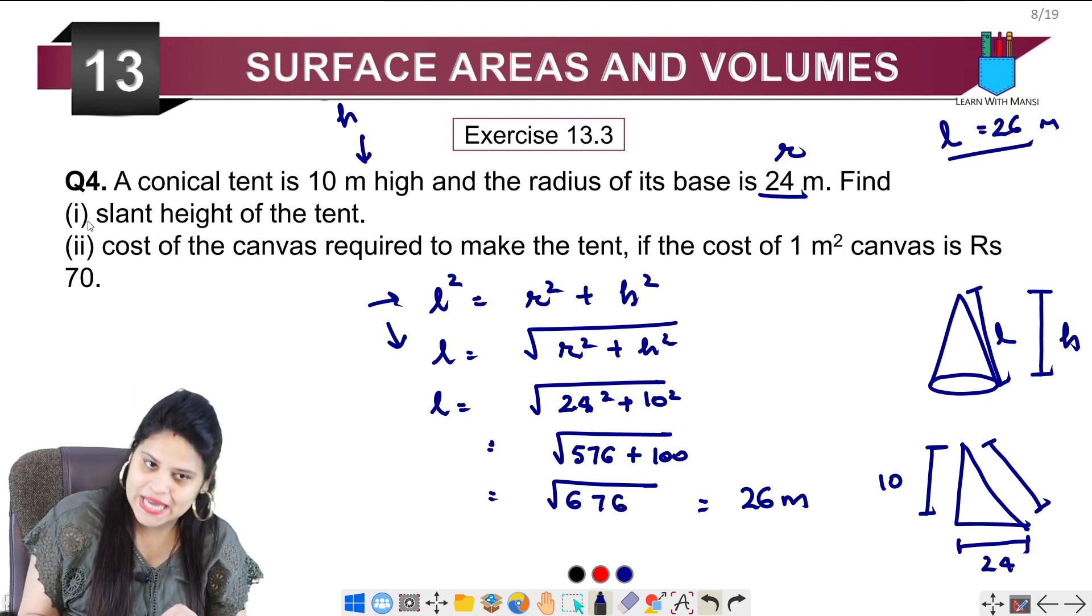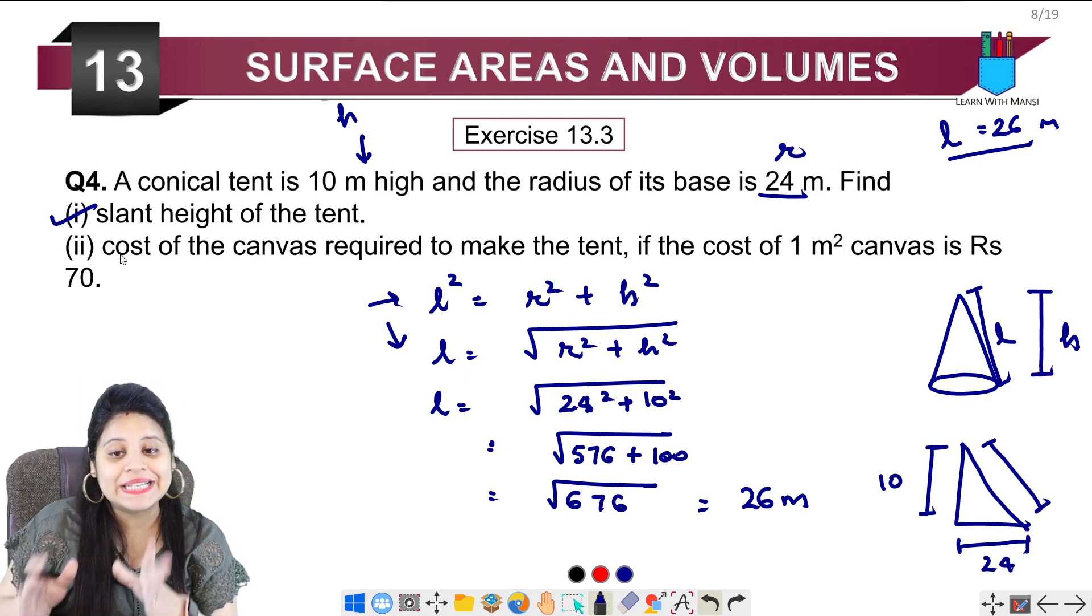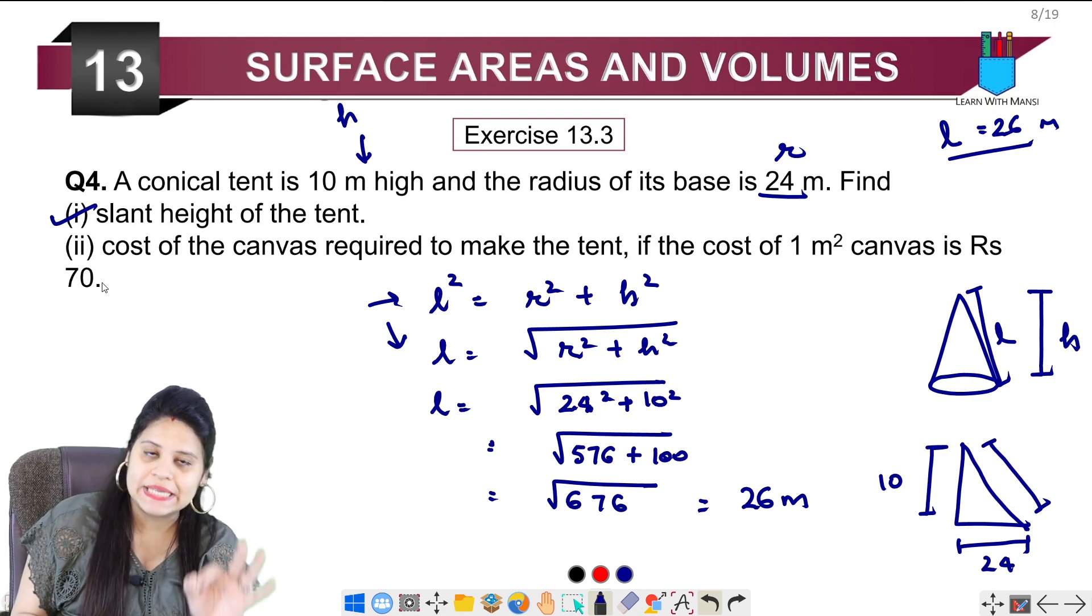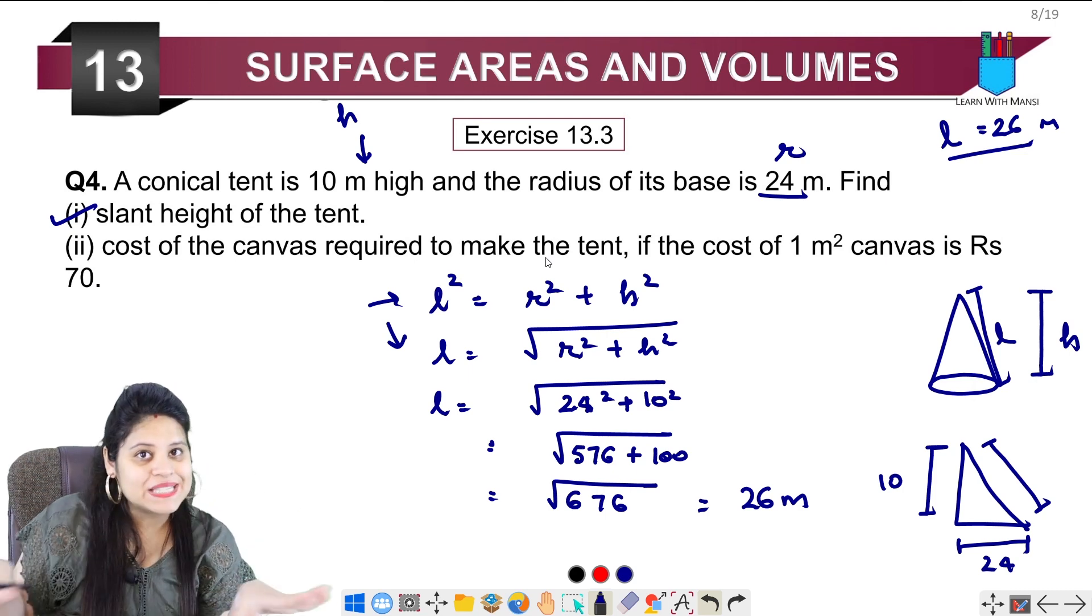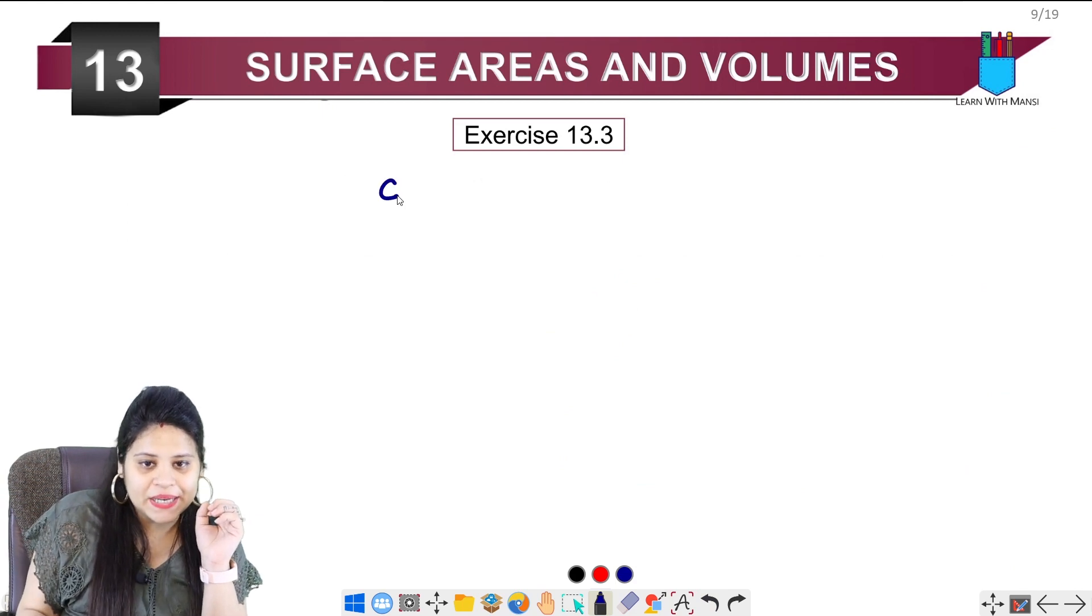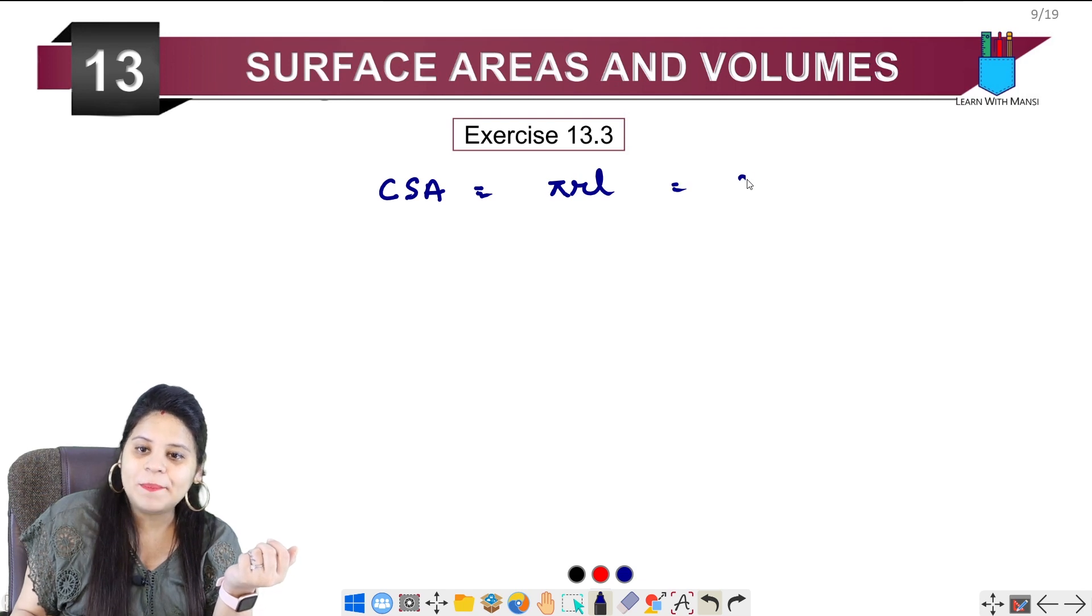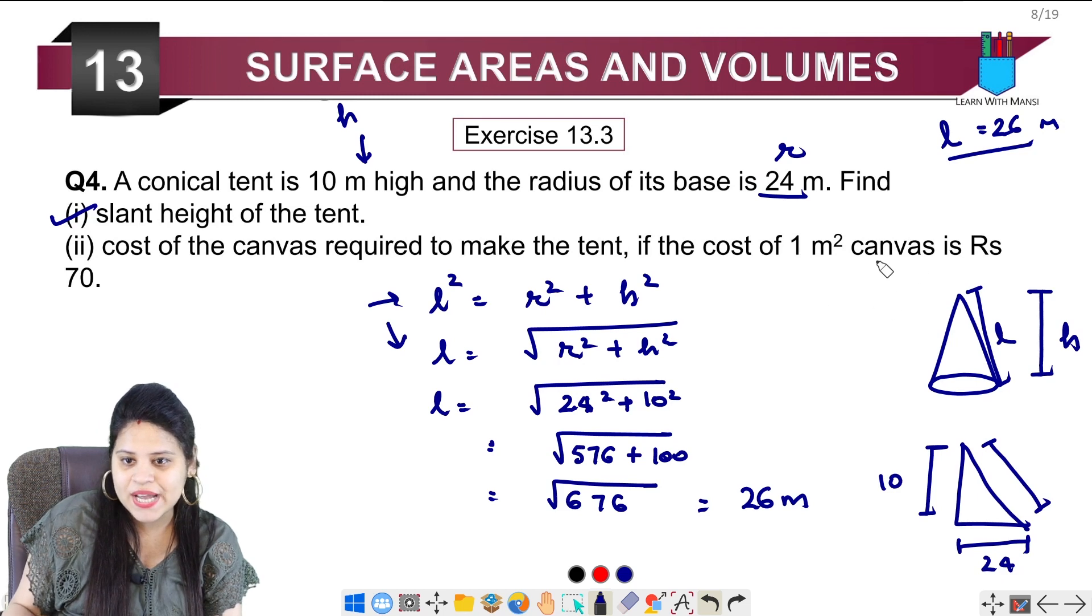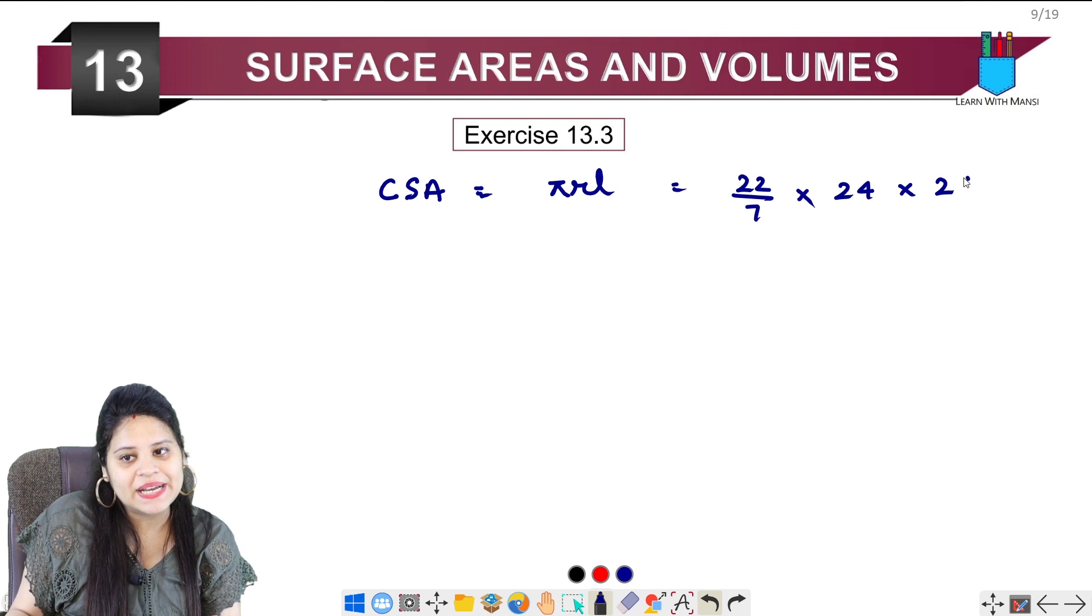We have to find the tent curved surface area, and then we will find the costing. So curved surface area is pi r l. Pi is 22 upon 7, radius is 24 given to us, and slant height is 26.